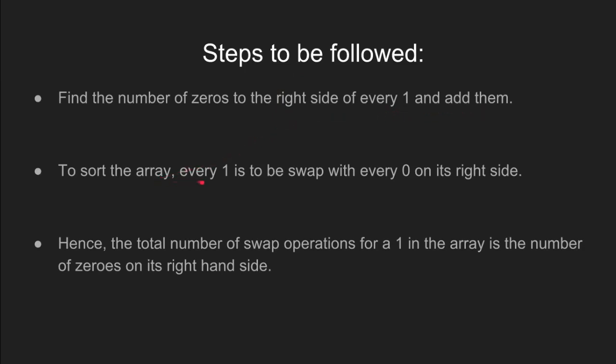In order to sort the array, every one has to perform a swap operation with every zero to its right side. So, the total number of swap operations for a particular one in an array is equal to the number of zeros to its right side.